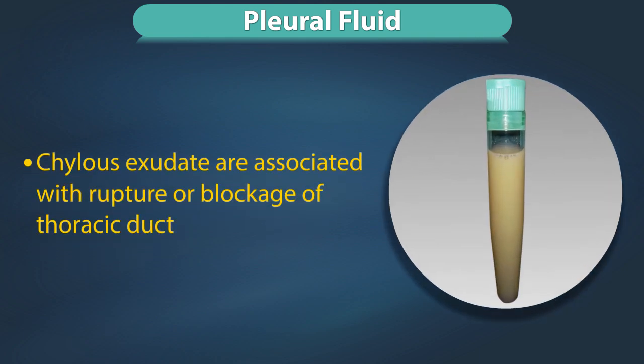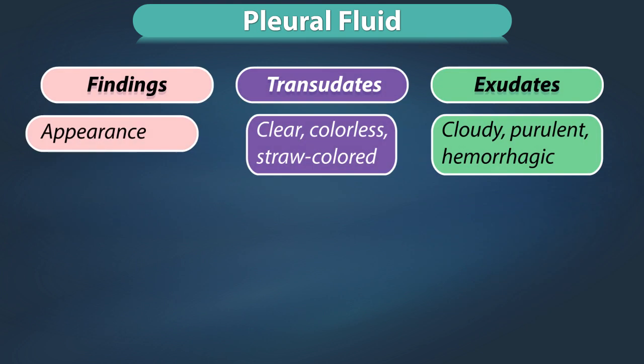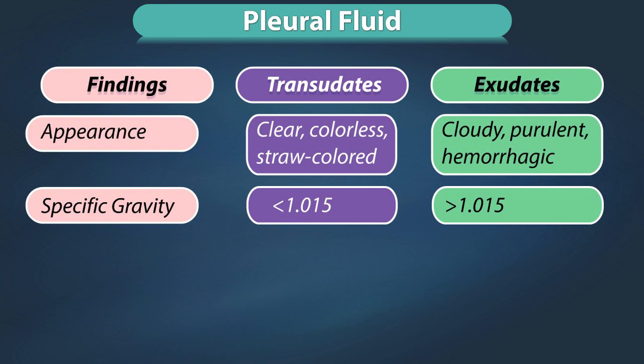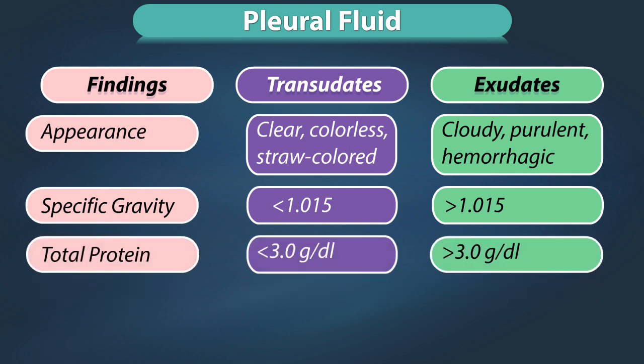Chylous exudates are associated with rupture or blockage of the thoracic duct. The table shown displays the criteria used to differentiate transudates from exudates. Appearance in a transudate is clear, colorless, straw-colored, while in an exudate it is cloudy, purulent, or hemorrhagic. Specific gravity of a transudate is less than 1.015; in an exudate it is more than 1.015. Total protein is less than 3 g per deciliter in a transudate and more than 3 g per deciliter in an exudate.